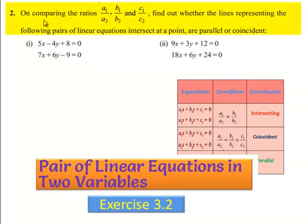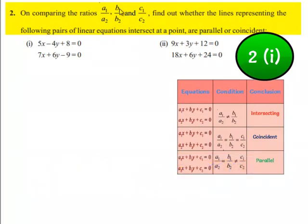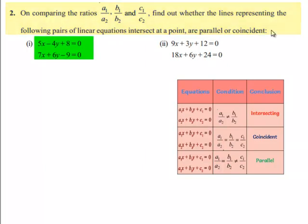Coming to the second problem, on comparing the ratios a1 by a2, b1 by b2, and c1 by c2, find out whether the lines representing the following pairs of linear equations intersect at a point, are parallel, or coincident.